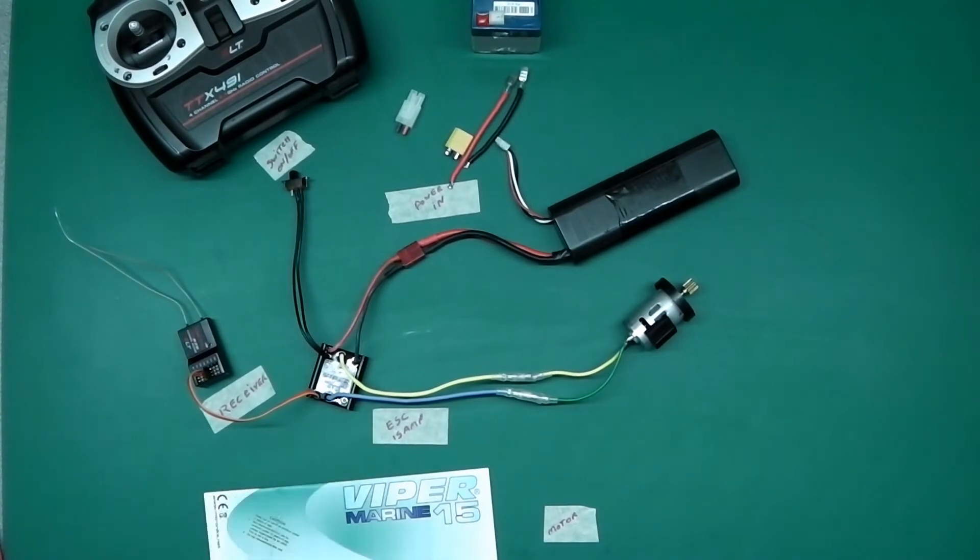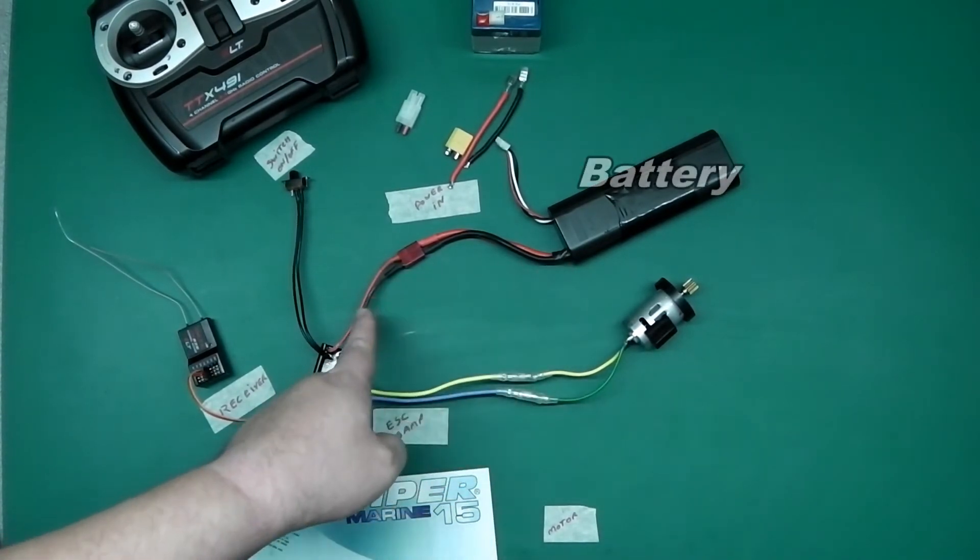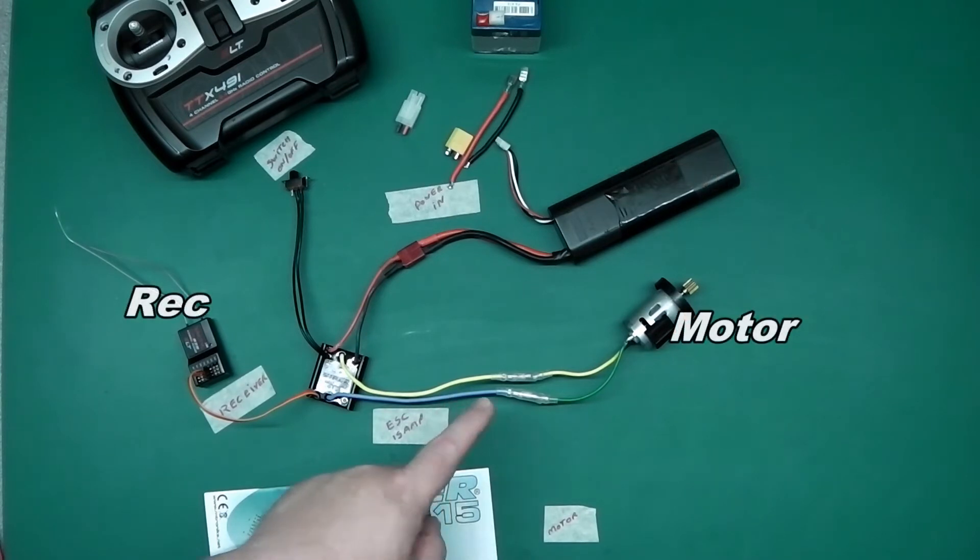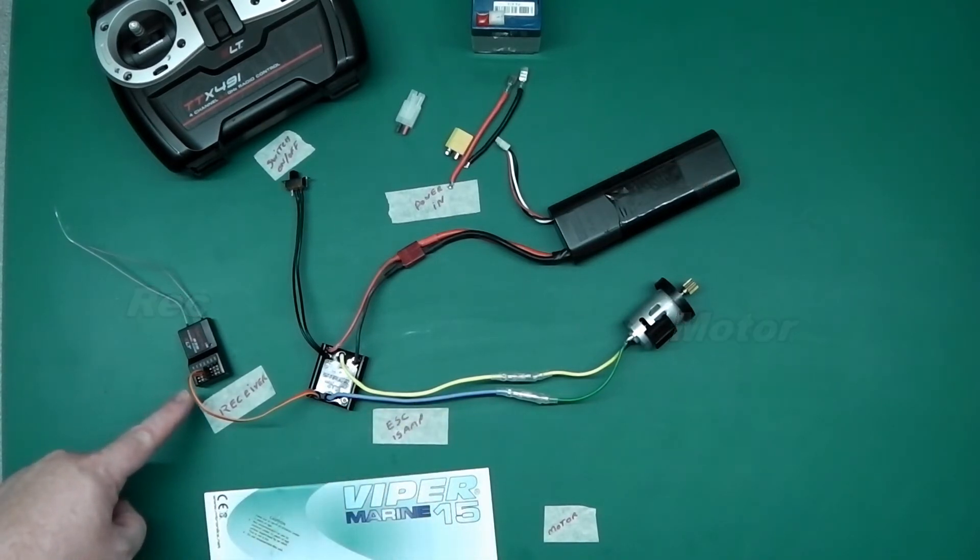As you can see, no light showing. So the battery is coming in the red and black. The motor is connected to the yellow and blue. The receiver is connected to the receiver wire. And the switch is there.